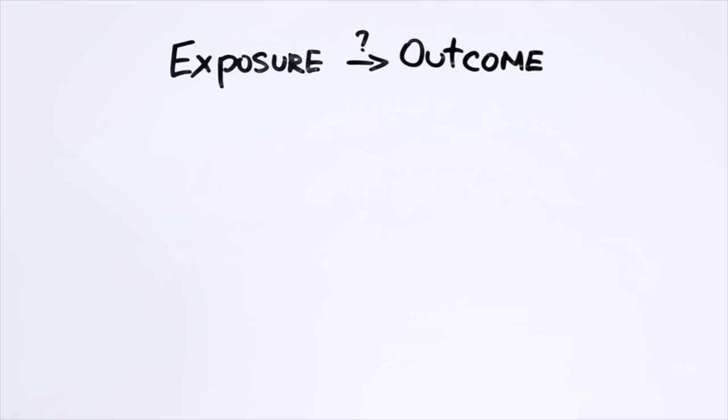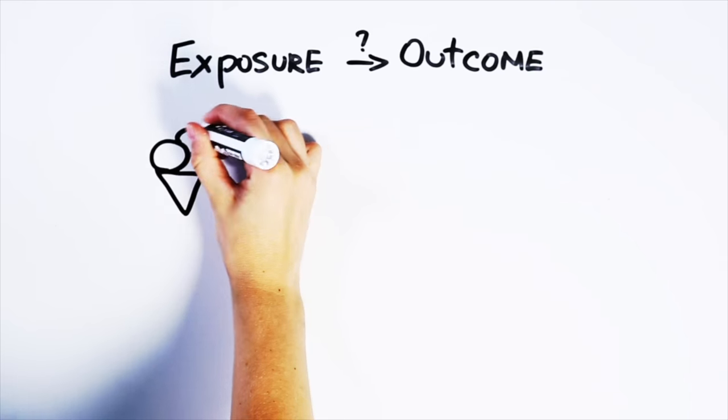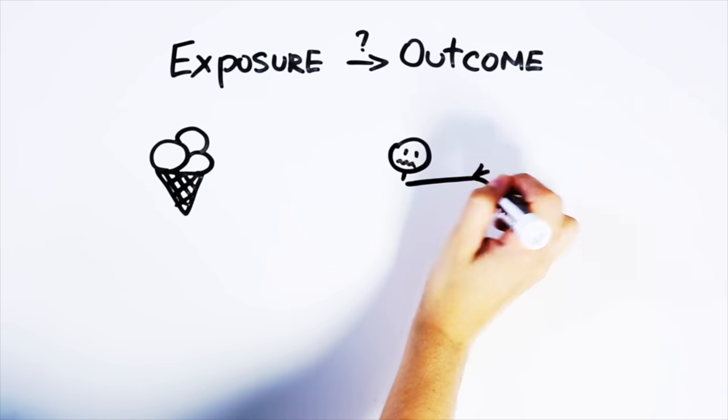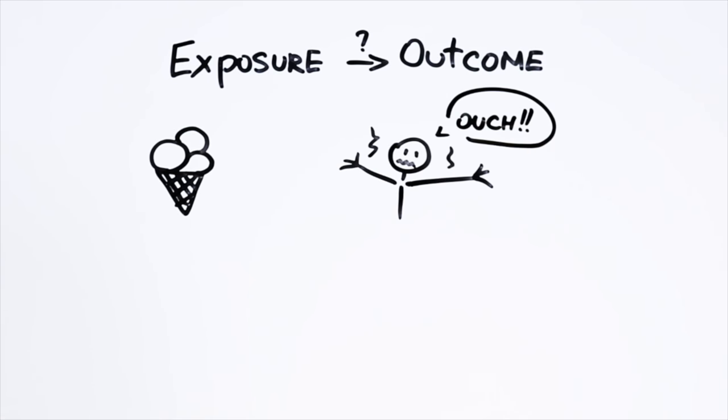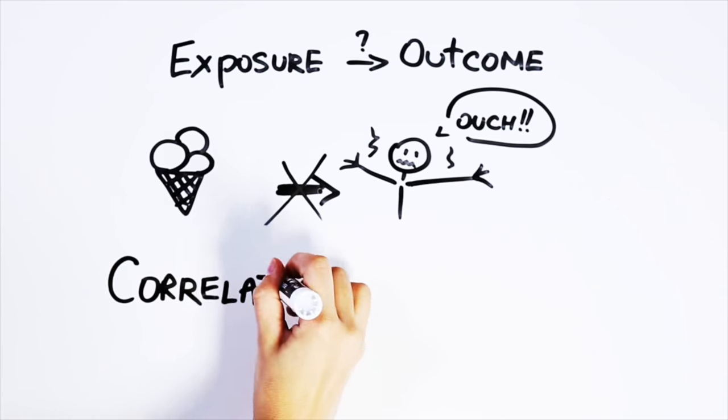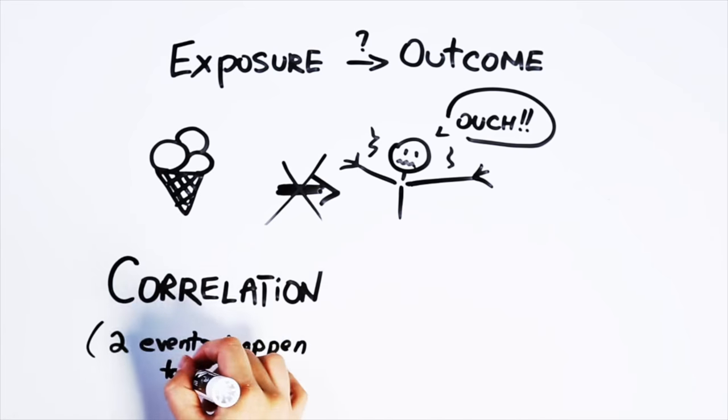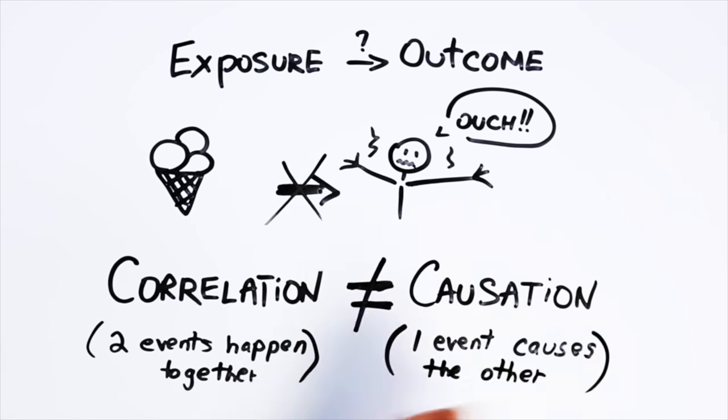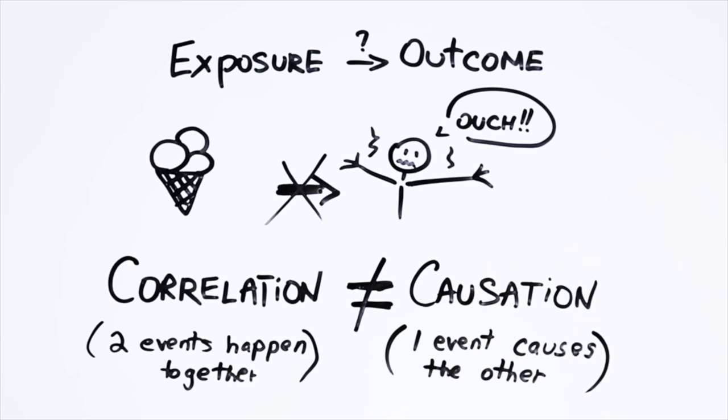For example, lots of people eat ice cream when it's hot. And lots of people get sunburn when it's hot. But ice cream clearly does not cause sunburn. These events are instead correlated, meaning they often happen together. But they're not causative, meaning that eating ice cream doesn't directly cause sunburn.